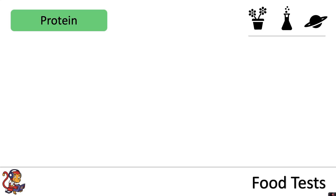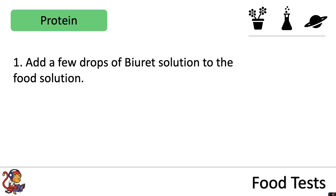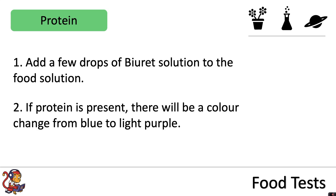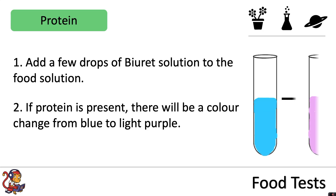To test for protein you would add a few drops of Biuret solution to the food solution. If protein is present there will be a colour change from blue to light purple.